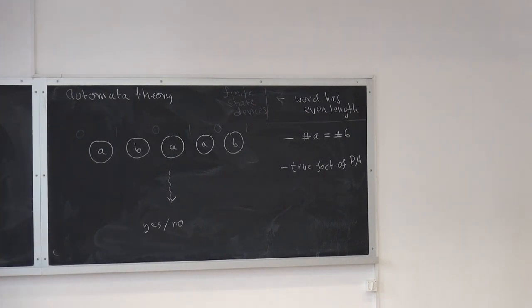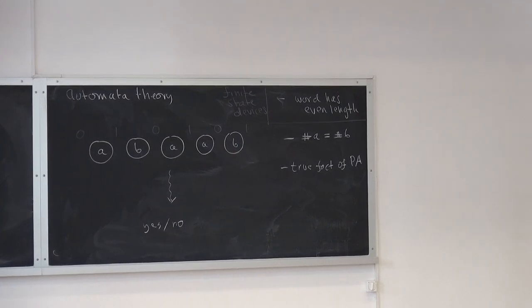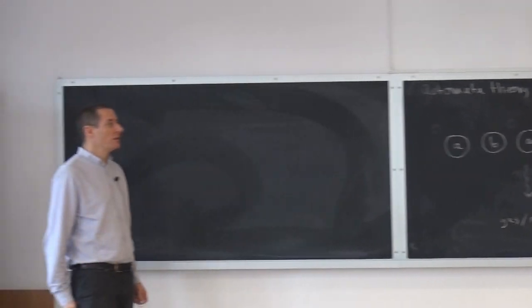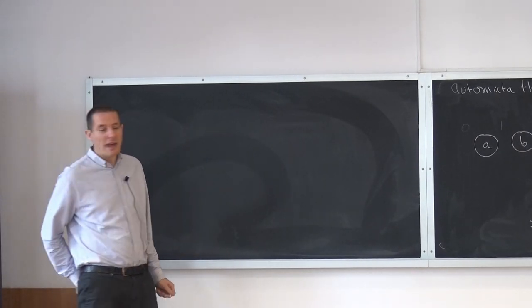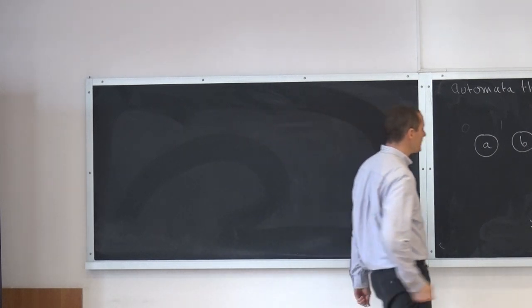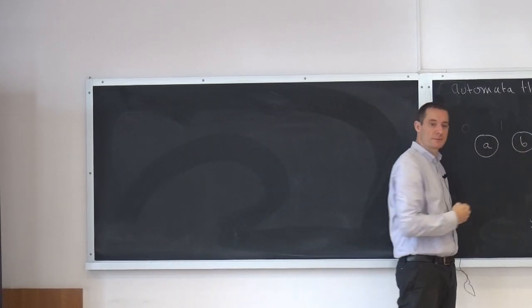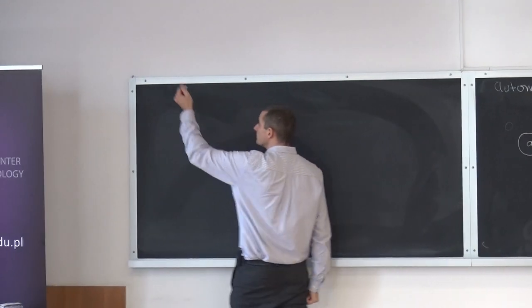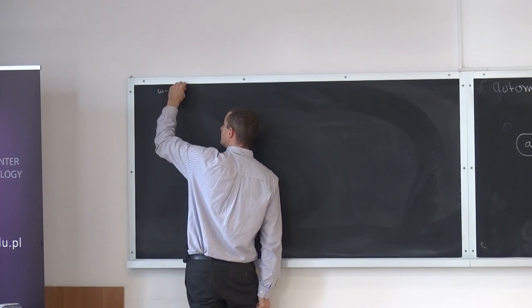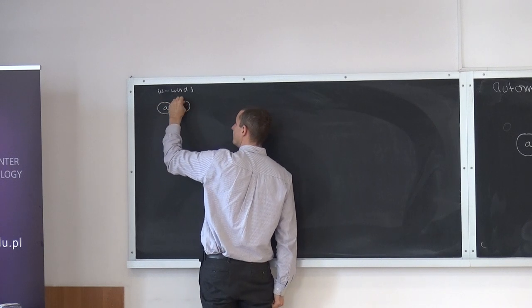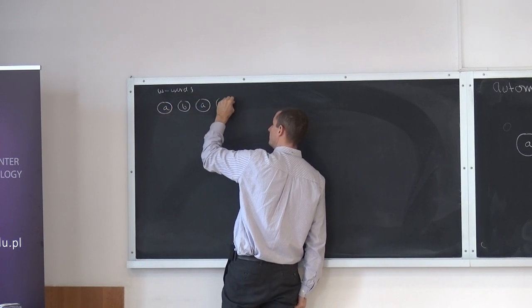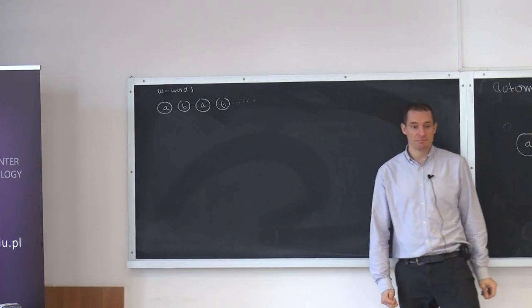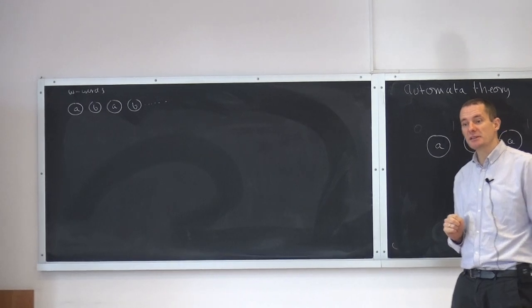Automata are one of the basic models in theoretical computer science. They were introduced like 60 years ago, in the fifties and late forties. One direction this study has taken is to use objects different than words. Here is what's called a finite word. But you could do different things — for example, omega words. An omega word looks like this: it doesn't end. Some people call these infinite words, but that's an inaccurate term, because there are many different ways in which a word could be infinite.